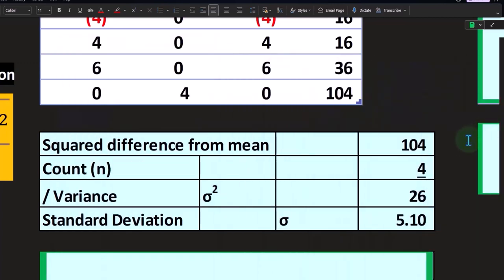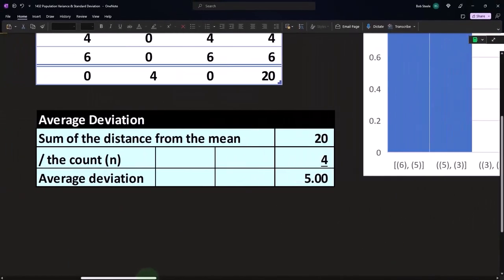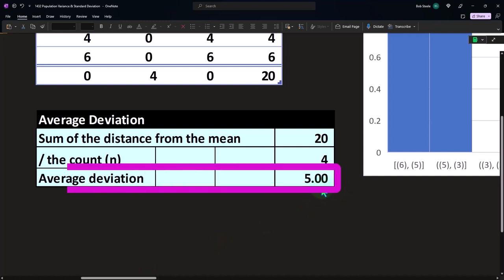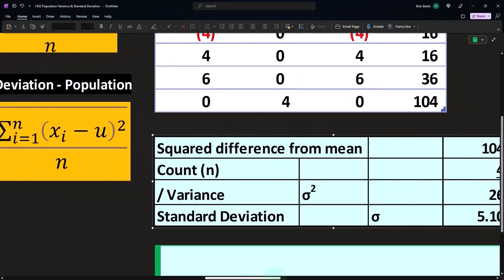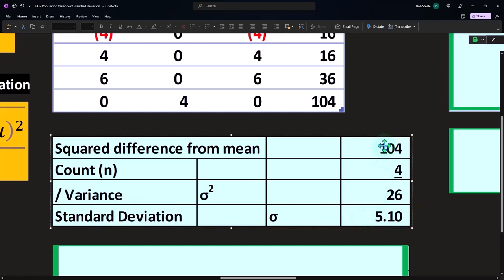Notice that number is similar but not exactly the same as what we got over here. Usually we get something a little bit larger if we use the average deviation calculation versus taking the standard deviation.